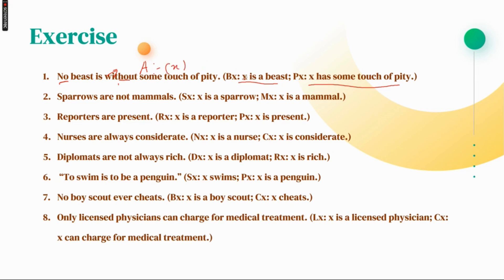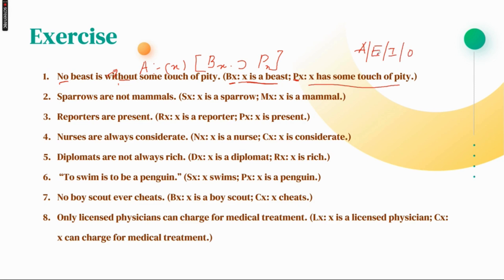So you write: universal quantifier X, then BX horseshoe PX — where B is the attribute for beast and P is some touch of pity. What you have to keep in mind while solving these examples is to check for the standard form. If it is already in the standard form, you don't have to worry. But if it is not in standard form, you should identify whether it is A, E, I, or O proposition. In this particular case it is A proposition.